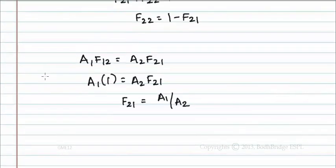Now substitute this f21 value in the above equation. That is, f22 equals 1 minus f21, which equals 1 minus a1 by a2.